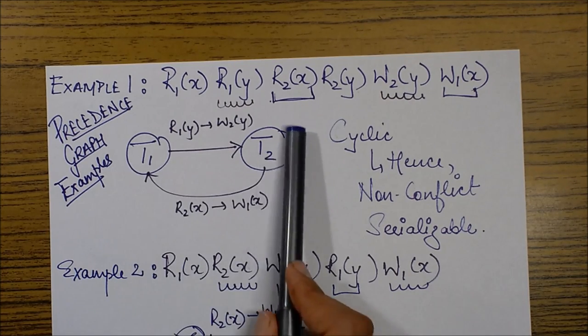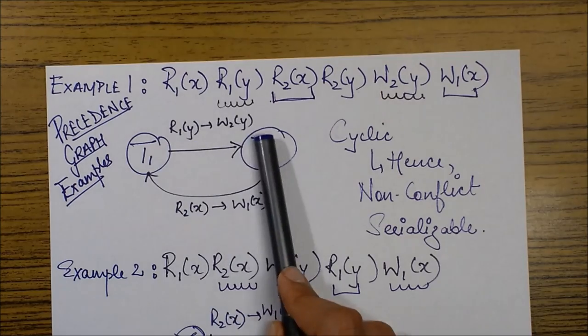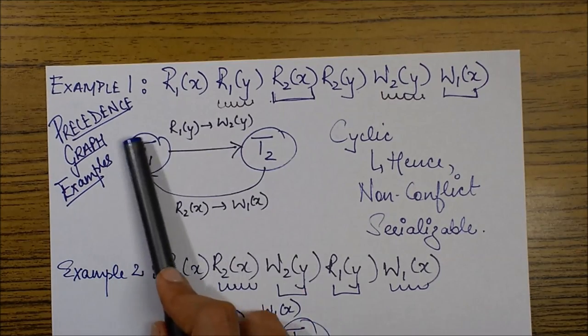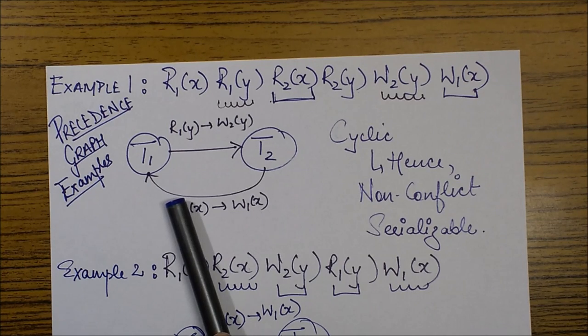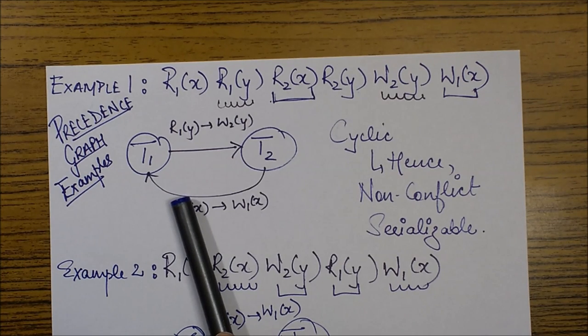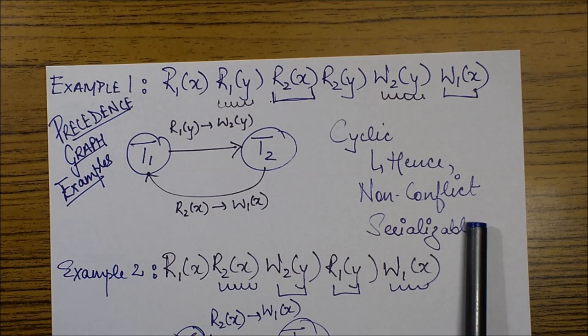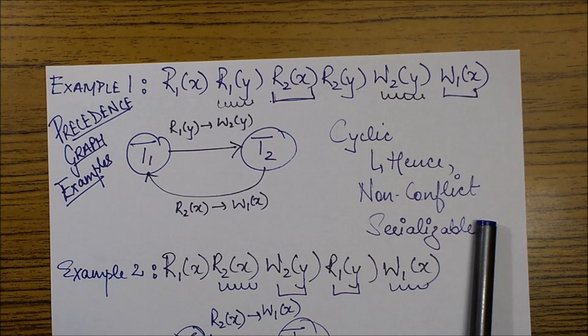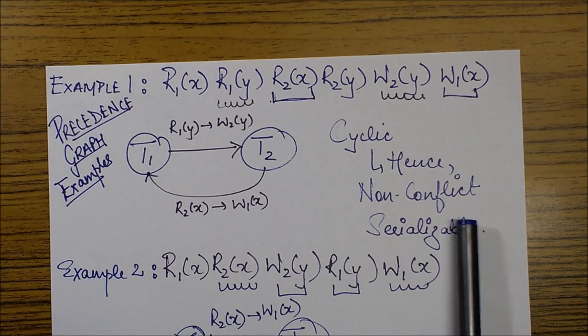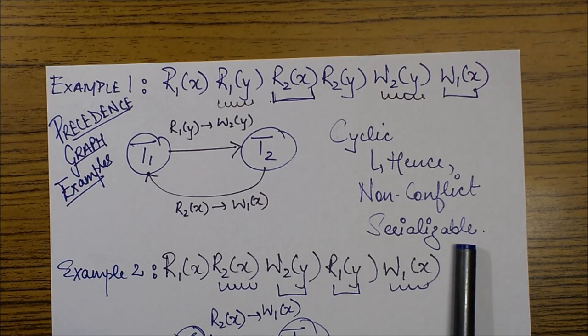As you can see that this graph is clearly a cyclic graph. This is a cycle, this is a loop. So that means this is an example of a non-conflict serializable schedule because if the graph would have been acyclic then it would have been conflict serializable. But otherwise it is always a non-conflict serializable schedule. So this is a non-conflict serializable schedule example.